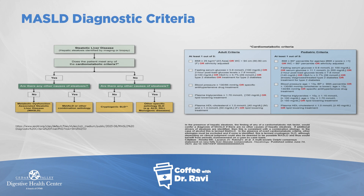Metabolic syndrome is defined by having one or more of these criteria: BMI greater than 25; fasting blood sugar greater than 100; glycosylated hemoglobin (HbA1c) more than 5.7, or diagnosed diabetes or on diabetes treatment; blood pressure more than 130 over 85 or on antihypertensive treatment; plasma triglycerides greater than 150 or on cholesterol-lowering medication; or plasma HDL less than 40 or on cholesterol-lowering treatment. Patients with metabolic syndrome tend to progress to scar tissue faster.